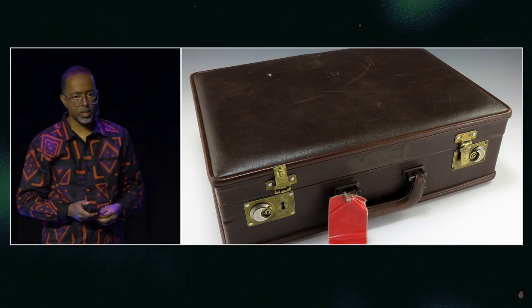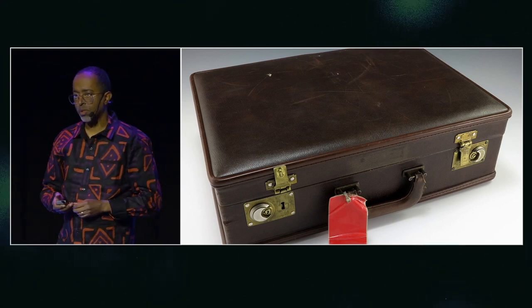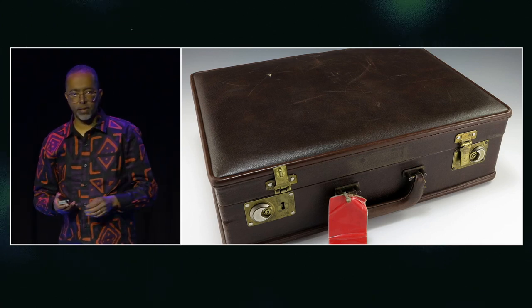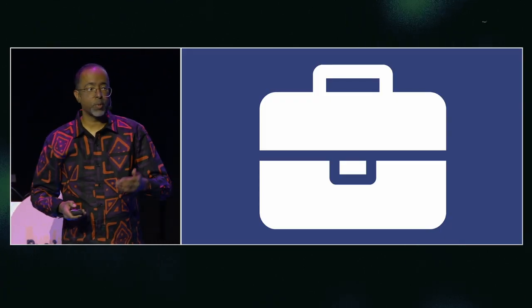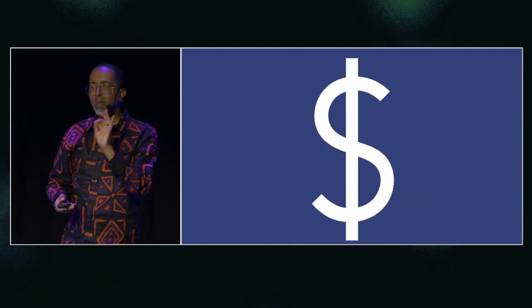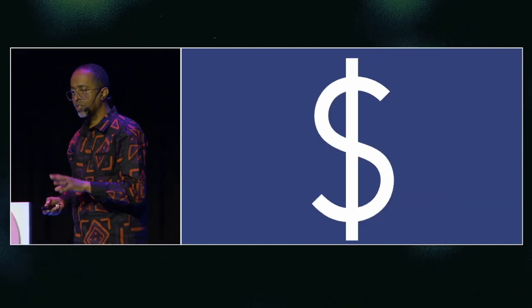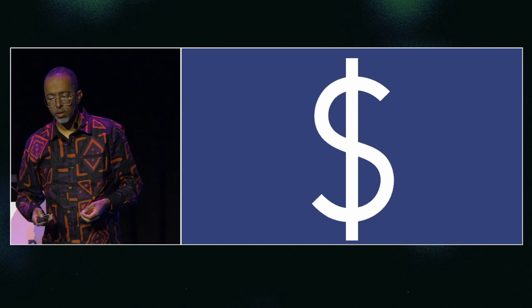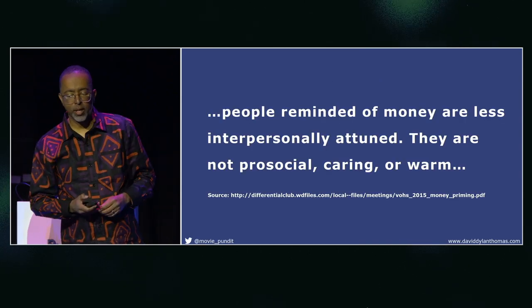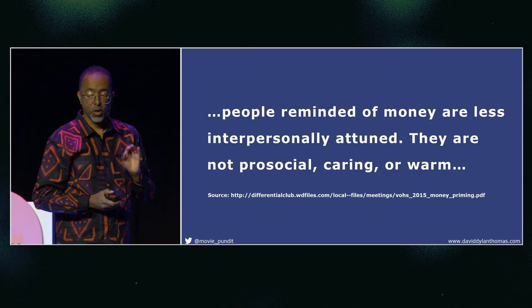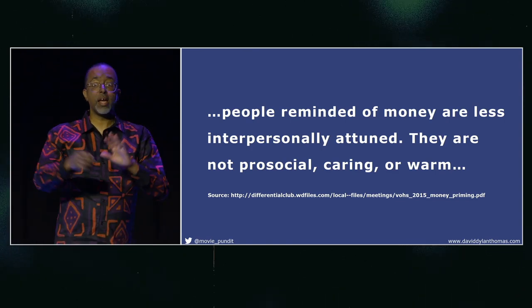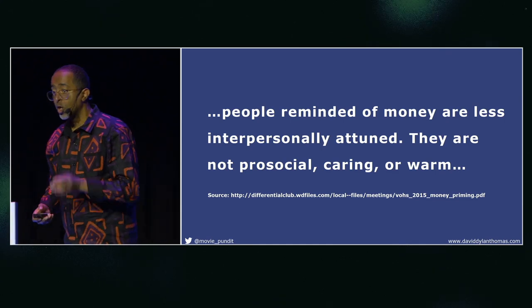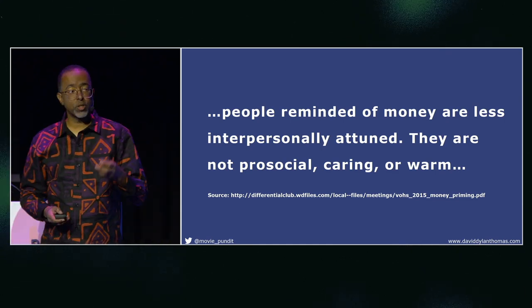Even the objects in the room can have an influence. If you're having an in-person meeting and there's a briefcase visible, people will act more competitive than if it were a backpack. This can even influence the imagery you use on your website. Things like money — whether it's a dollar sign or a particular color of green — remind people of money and make them less interpersonally attuned, not prosocial, caring, or warm. So if you want any of those things, be careful about what imagery you use.